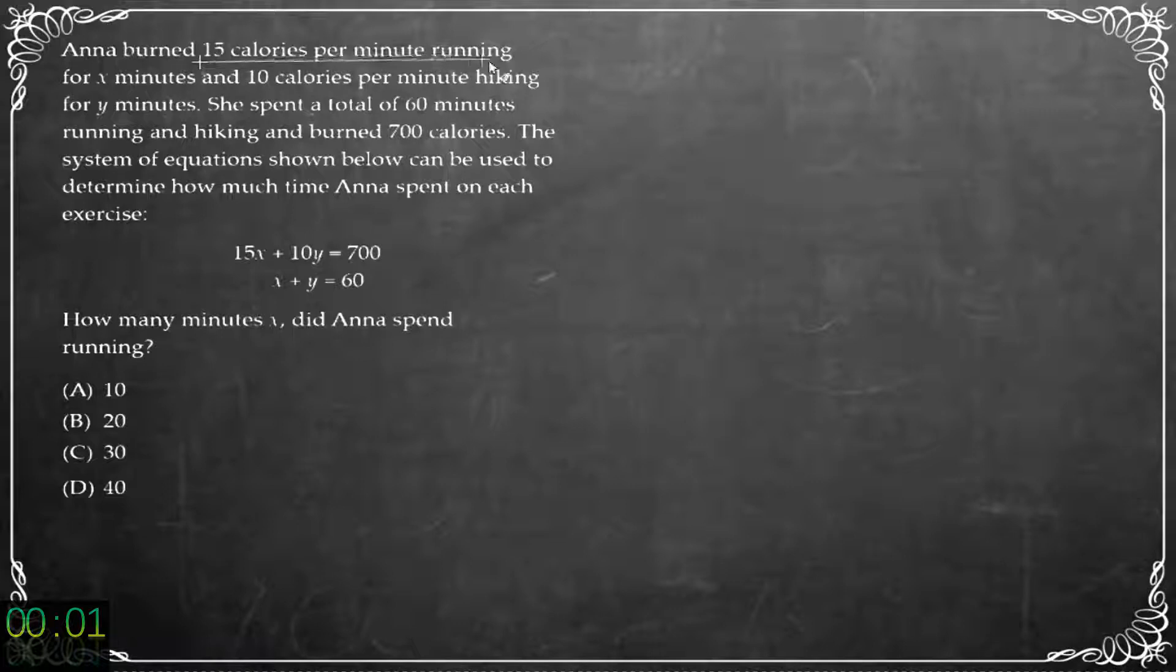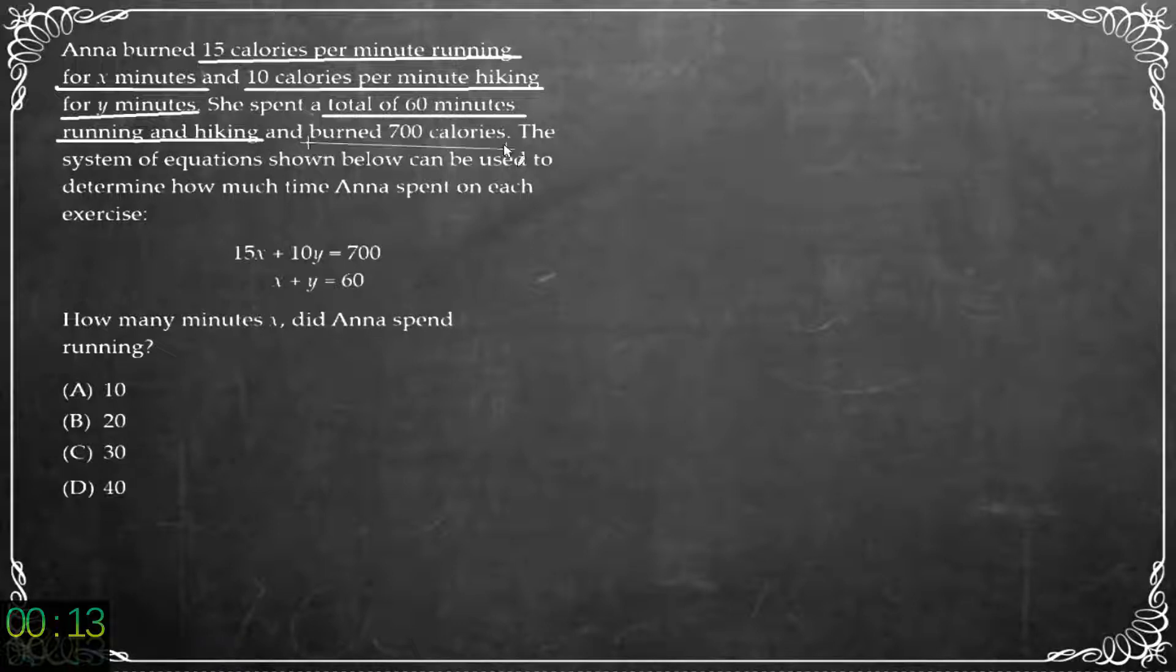Anna burned 15 calories per minute running for X minutes and 10 calories per minute hiking for Y minutes. She spent a total of 60 minutes running and hiking and burned 700 calories. The system of equations shown below can be used to determine how much time Anna spent on each exercise. How many minutes X did Anna spend running?